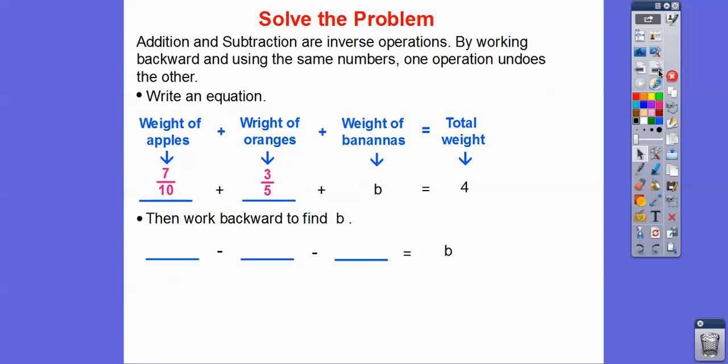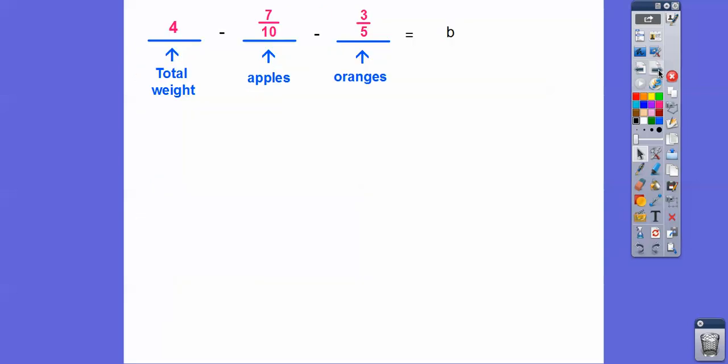So the apples weighed seven tenths and the oranges weighed three fifths of a pound. And now we're going to go ahead and work backwards. So what we're going to do is take the total weight and we're going to subtract off the apples and then subtract off the oranges. And that'll give us the leftover weight, which is going to be the bananas. So let's go ahead and plug those numbers in.